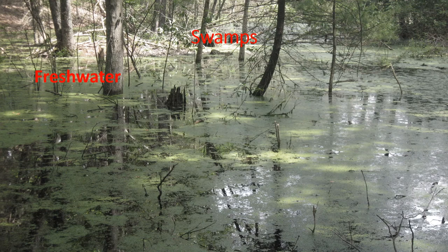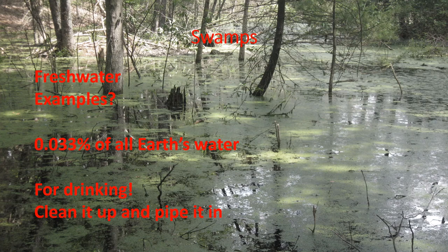Next is swamps. Swamps are freshwater — not saltwater swamps, not typically. Some examples of swampy places: the southeastern United States has some swampy places like Louisiana. 0.033% of earth's water is found within swamps, so we're getting down to quite a small percentage. We do use swamp water for drinking if that's the source of fresh water in your area. You just have to clean it really carefully — treat it to remove algae or any impurities — and then pipe it in. We have very sophisticated water treatment that can make it clean to drink.